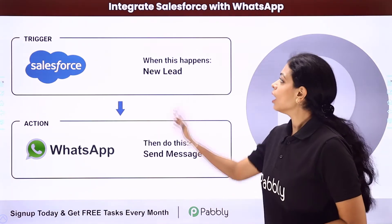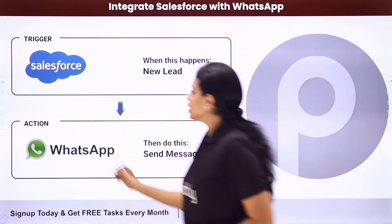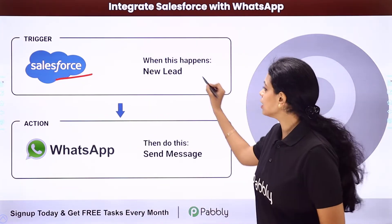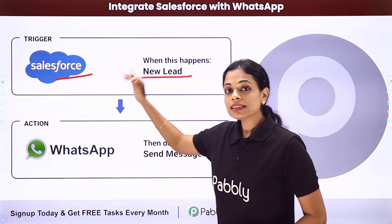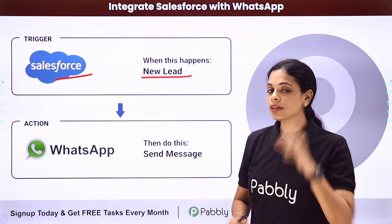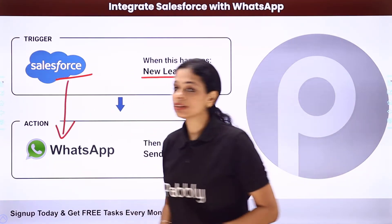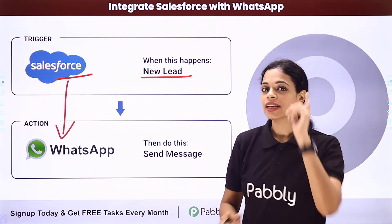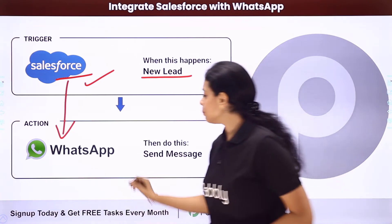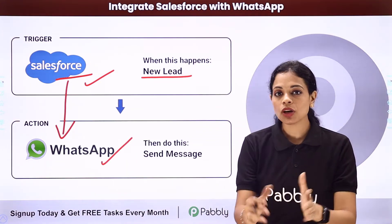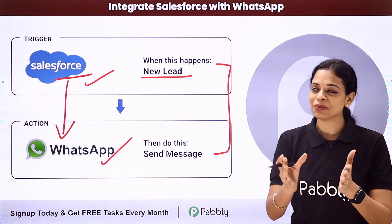In this video, we are going to see how to integrate Salesforce with WhatsApp. Let's say you are using Salesforce as your CRM and you want that every time there is a new lead created on your CRM, this lead should be sent a message through WhatsApp. For this, you will have to integrate these two applications, and the same can be done using Pabbly Connect software. To understand this, let me take you to my screen.